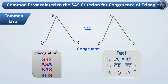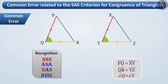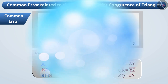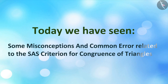Therefore, we cannot say whether the two triangles are congruent or not. If we were given that the corresponding sides and the angles between them are equal, then we could say, under the SAS criteria, that both triangles are congruent. Always use logic in geometry, not recognition or perception. Today we have seen some misconceptions and common errors related to the SAS criterion for congruence of triangles.